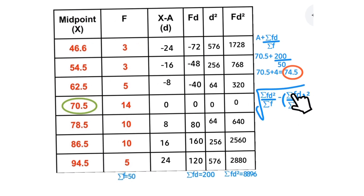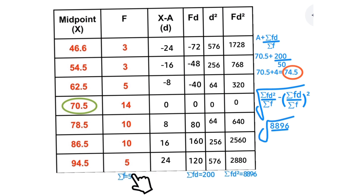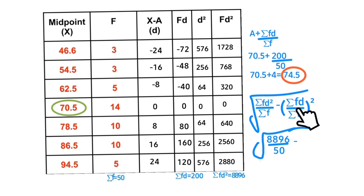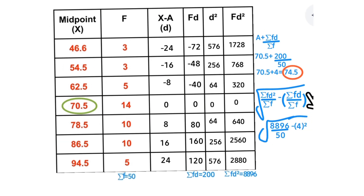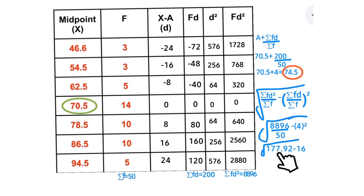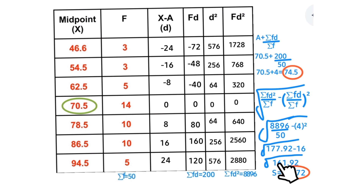This is the formula for calculating the standard deviation using the assumed mean method: s = √(Σfd²/Σf − (Σfd/Σf)²). We have Σfd² = 8896, Σf = 50, and Σfd/Σf = 4. So: 8896/50 = 177.92; 4² = 16; 177.92 − 16 = 161.92. The square root of 161.92 = 12.72. The standard deviation of the students' mass using the assumed mean method is 12.72.